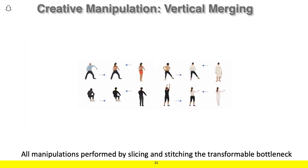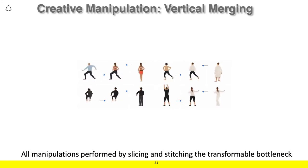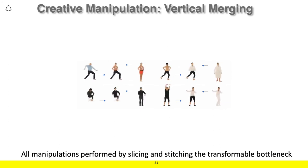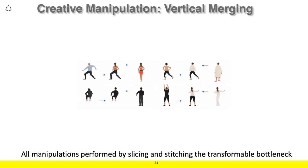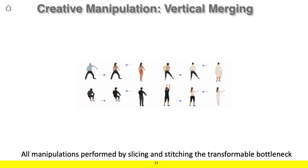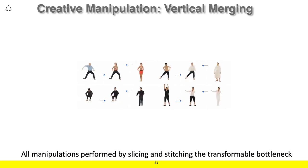We also show vertical merging of human subjects. Given the input images, we extract a single volume corresponding to each subject. Then we combine the top half of one subject's volume with the bottom half of another, and rotate the result to produce consistent results with the torso of one subject and the legs of another. Note how this produces consistent results for each target viewpoint.